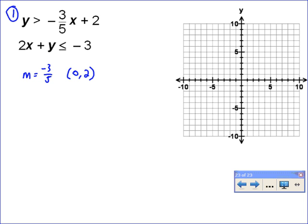And so we're going to graph that zero-two. Slope is negative three-fifths, so down three to the right five, down three to the right five. And so this is going to be a dashed line because it's greater than and not greater than or equal to. So we have a dashed line going through that point.